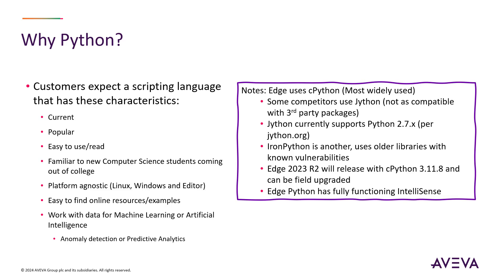Why did we add Python scripting? Our customers expect a current, popular scripting language that's easy to use, easy to read, is familiar to new computer science students coming out of college, platform agnostic — which means it supports Windows, Linux, and our editor on Windows — and it's easy to find resources, such as on YouTube, as well as it'll work with data for machine learning or artificial intelligence, such as anomaly detection or predictive analytics.